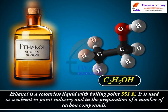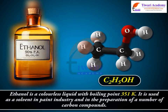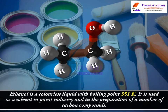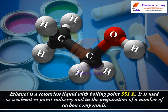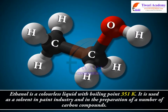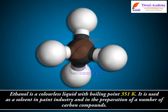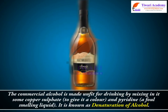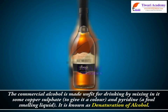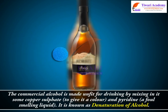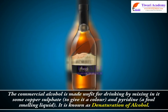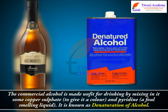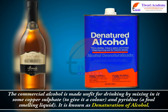Ethanol is a colourless liquid with boiling point 351 K. It is used as a solvent in the paint industry and in the preparation of a number of carbon compounds. The commercial alcohol is made unfit for drinking by mixing in it some copper sulphate to give it a colour and pyridine, a foul-smelling liquid. This process is known as denaturation of alcohol.